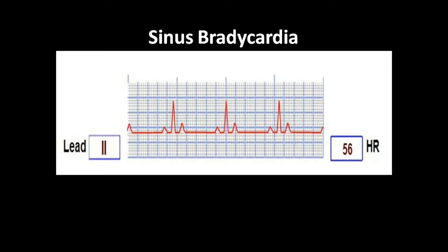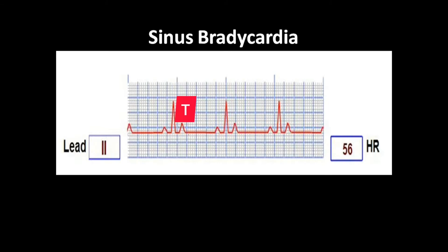Here again you can see a P wave, QRS complex and a T wave. And there will be an isoelectric line, then again a P wave, QRS complex and a T wave. So this pattern is repeating.